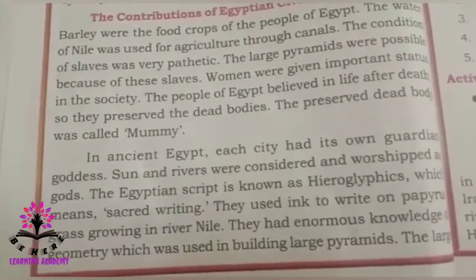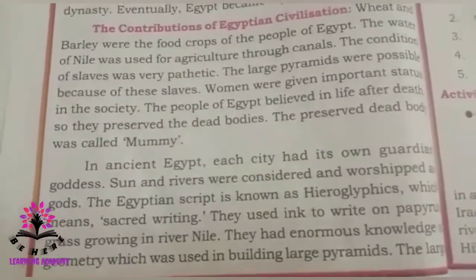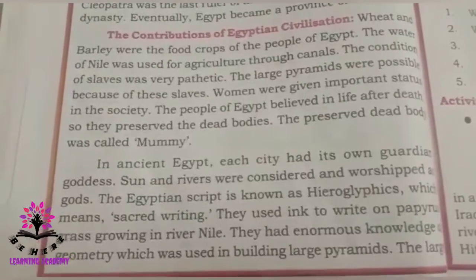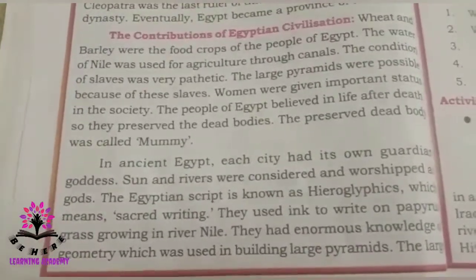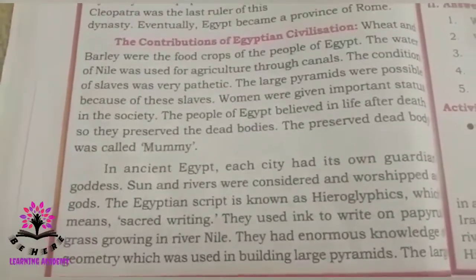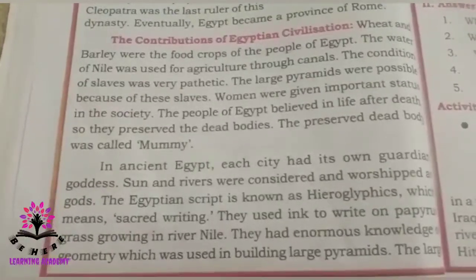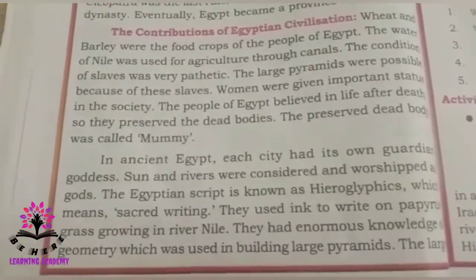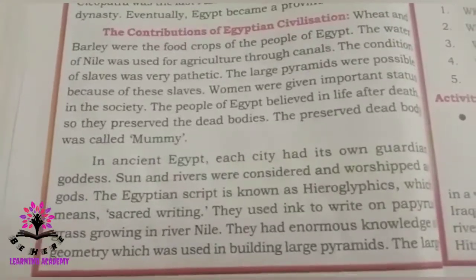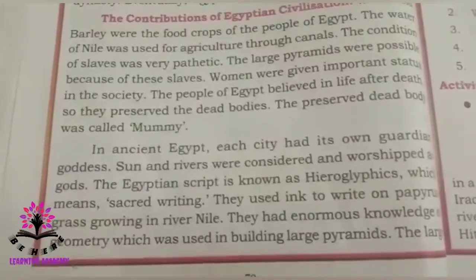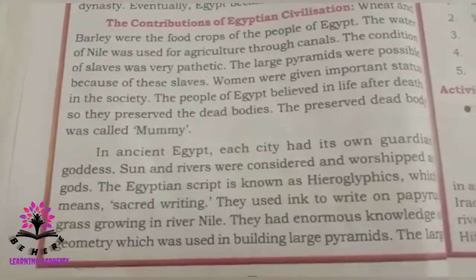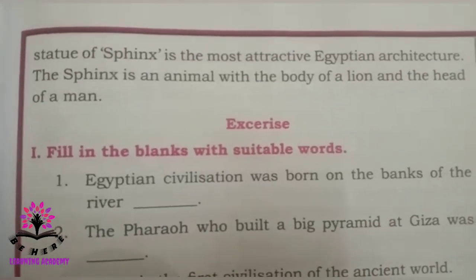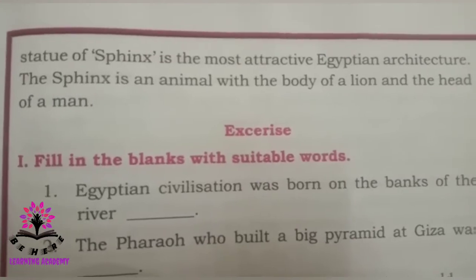The Egyptian script is known as hieroglyphics, which means sacred writing. They used to take papyrus grass, which grew on the River Nile, and with ink they used to write this sacred writing. They had knowledge of geometry, which was used in building large pyramids. The large statue of the Sphinx is the most attractive Egyptian architecture — the Sphinx is an animal with the body of a lion and the head of a man.